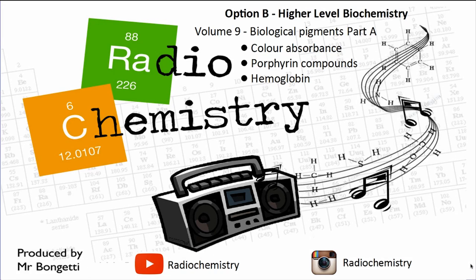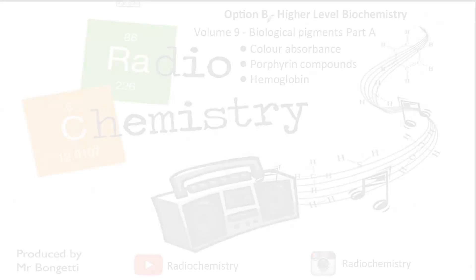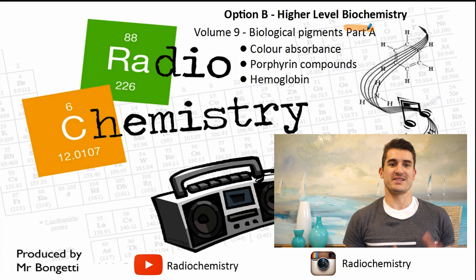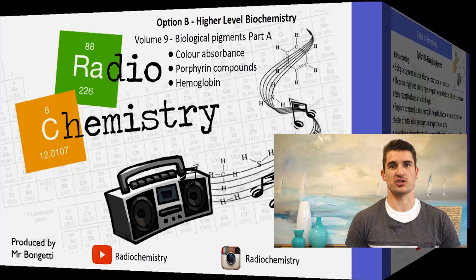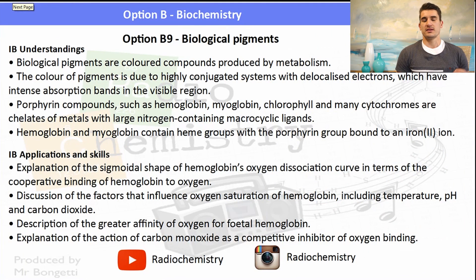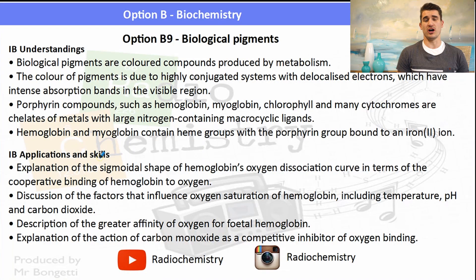Welcome to another video — this is Option B Higher Level Biochemistry Volume 9, where we look at the biological pigment section of the course. Volume 9 covers biological pigments: Part A includes a discussion of color absorbance, porphyrin compounds, and hemoglobin structure. This topic has quite a few IB understandings and applications, so make sure you check them out and know what you need for this video.